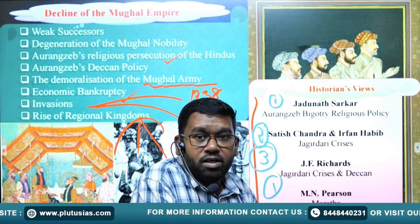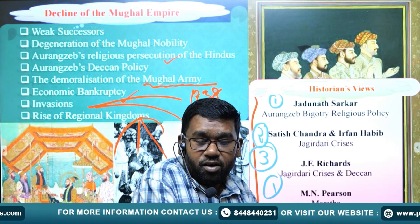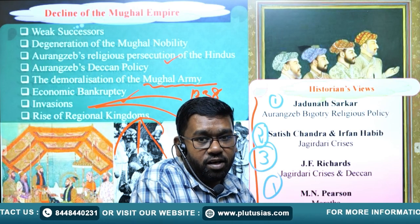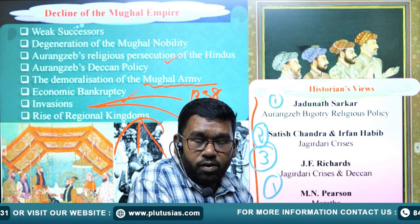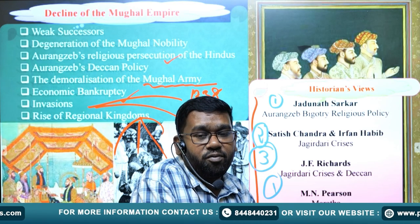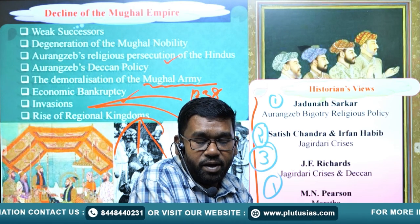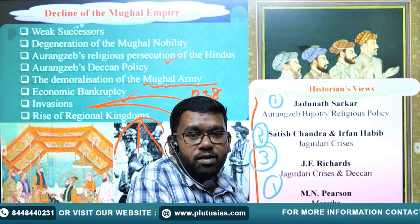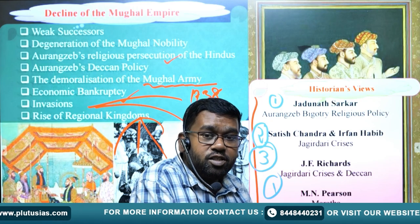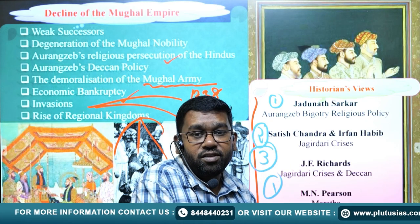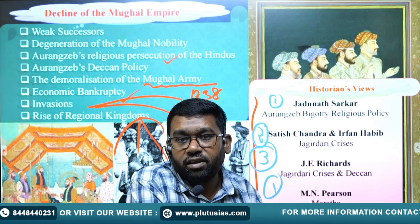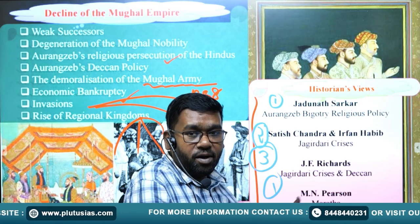M.N. Pearson argued that the Marathas were the major cause behind the decline of the Mughals. It was because of the Marathas that Aurangzeb had to leave north India and spend 27 years in south India, where he eventually died and was buried in Aurangabad. After Aurangzeb's death, the Marathas became more and more powerful under Bajirao I and Balaji Bajirao as Peshwas. They became so powerful that they collected tribute from the Mughals — making the rise of the Marathas a key reason behind Mughal decline, as argued by M.N. Pearson.